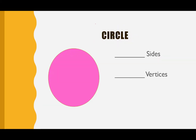Our next shape is a special shape — this is called the circle. Let's go over the letters in the word circle: C, I, R, C, L, E. Circle. Now you try to say it: circle. The C in this word makes a kind of an S sound, so it's a little bit weird, but it's circle.